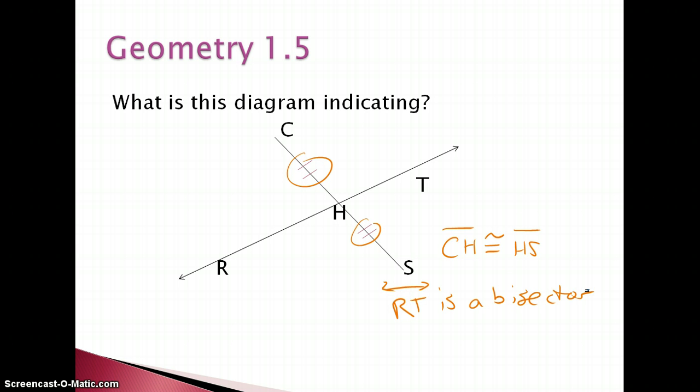More specifically, it's a bisector of segment CS. So this diagram is indicating, just by these two tick marks, that this line is bisecting our segment. H is the midpoint. We have two congruent segments and we have a bisector.